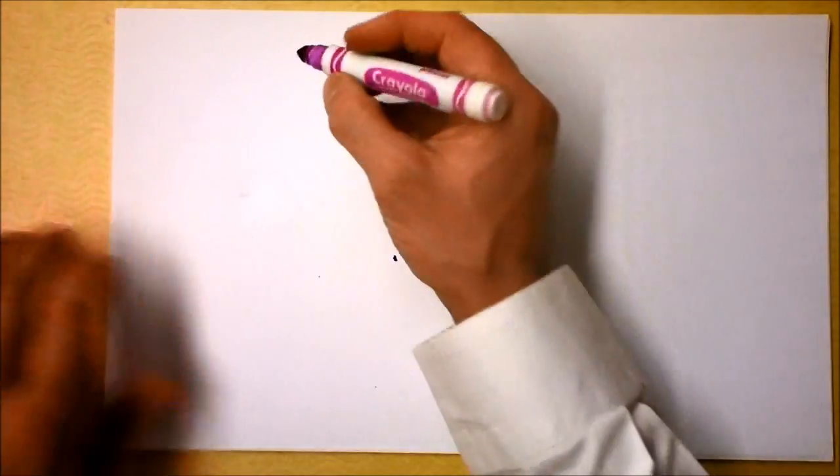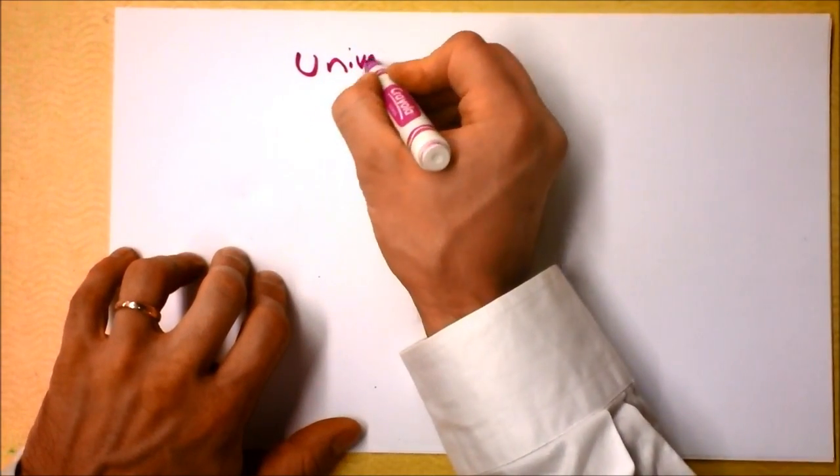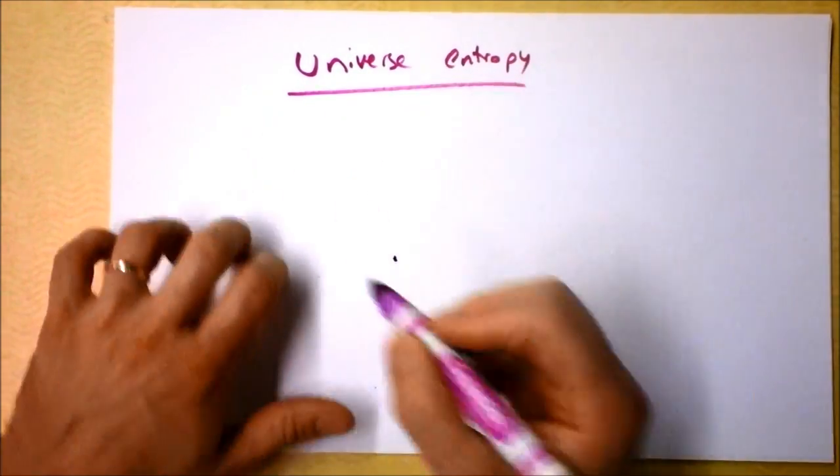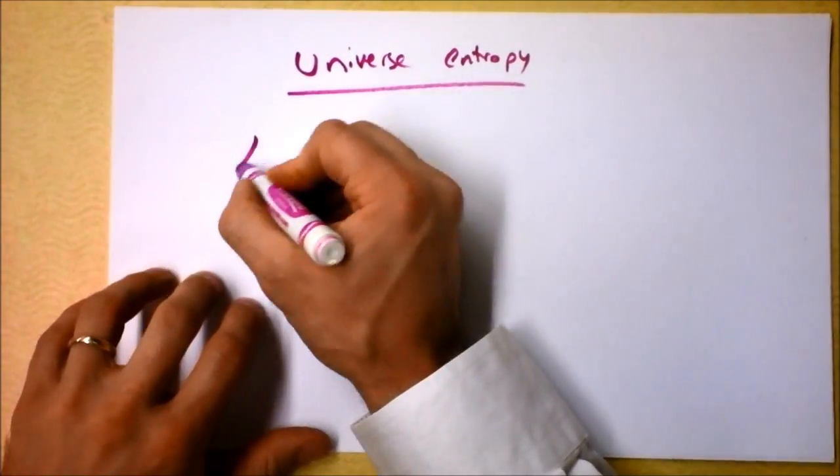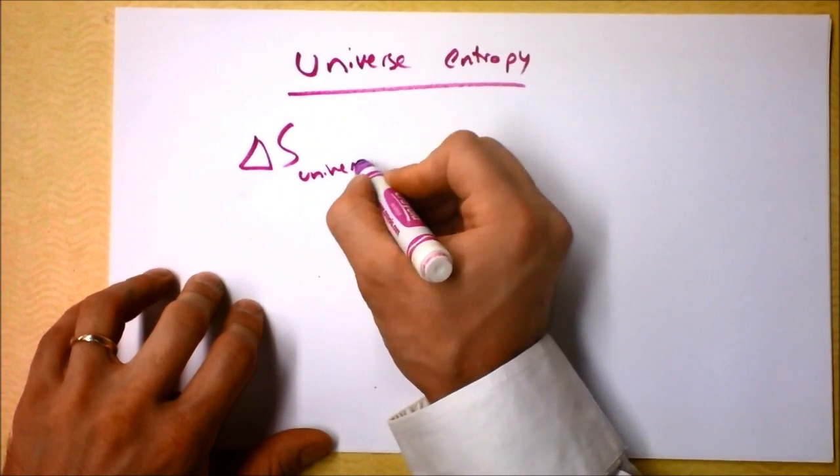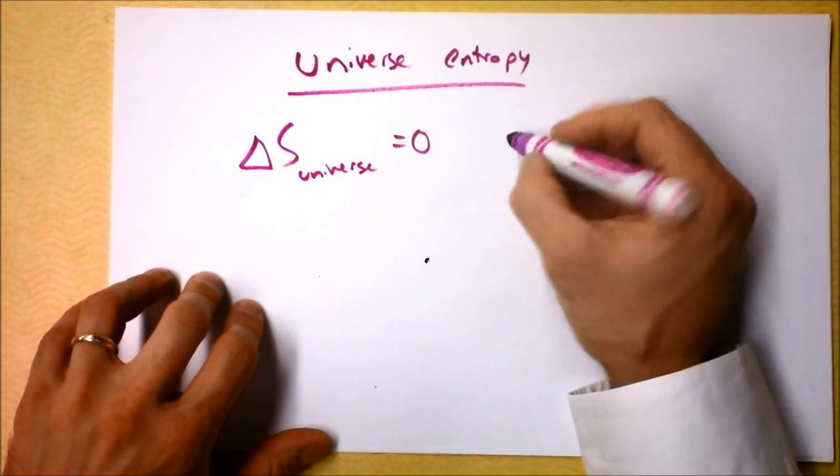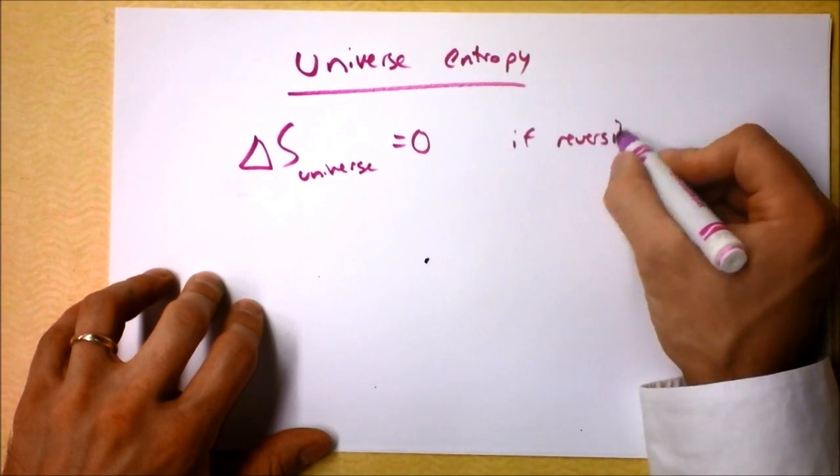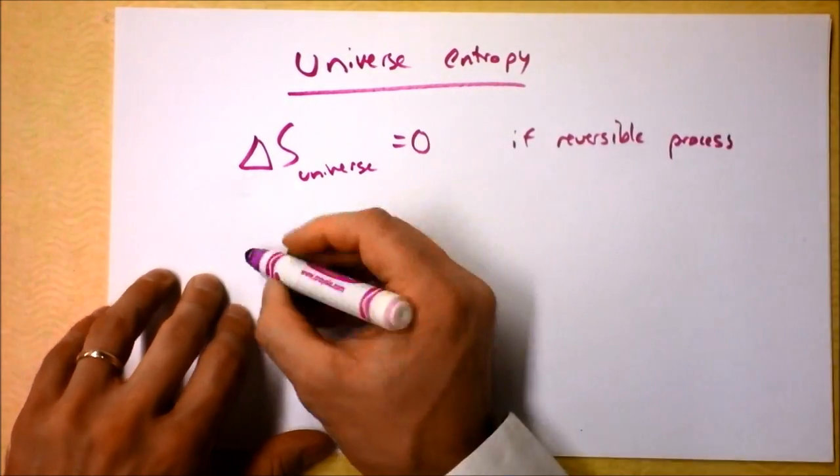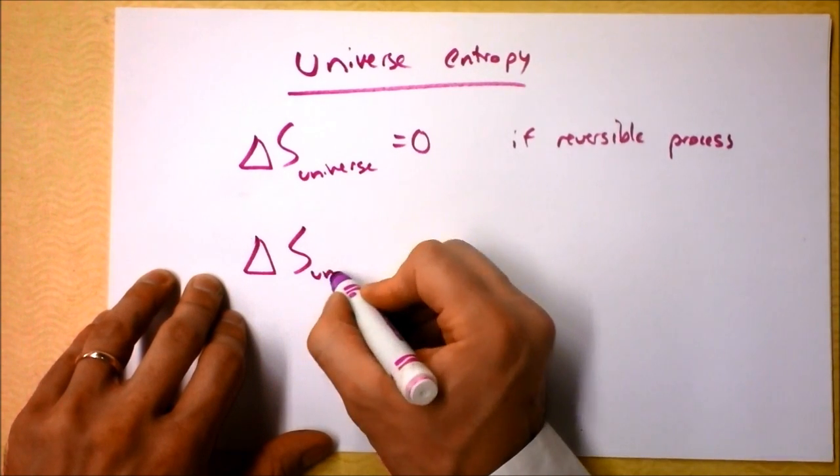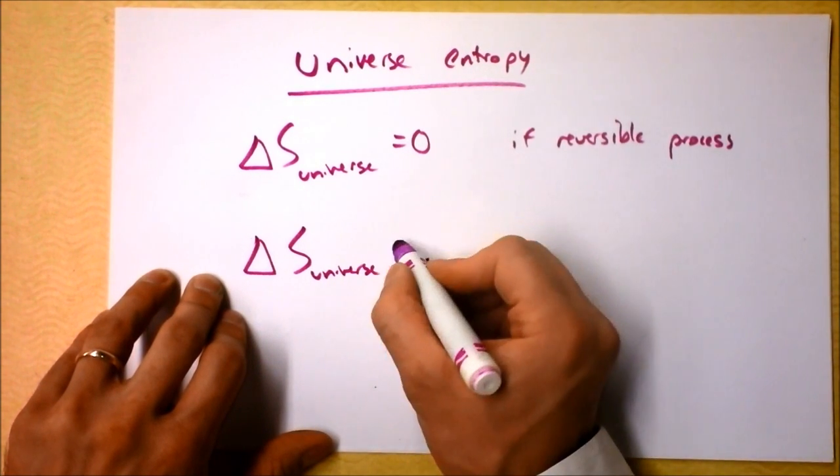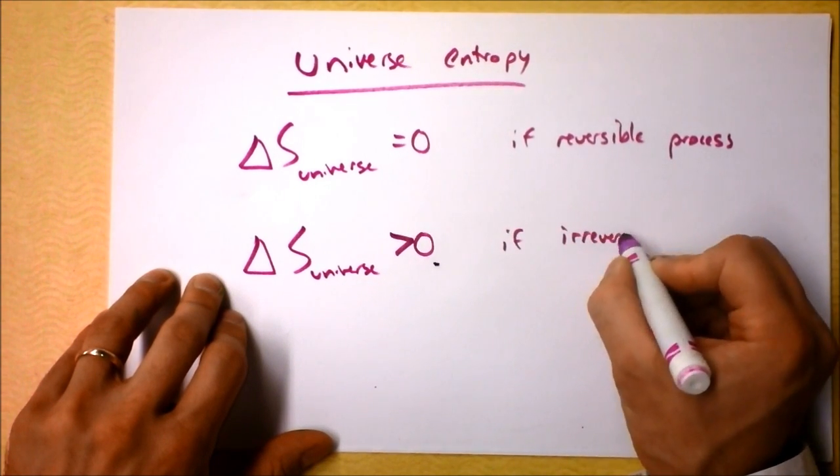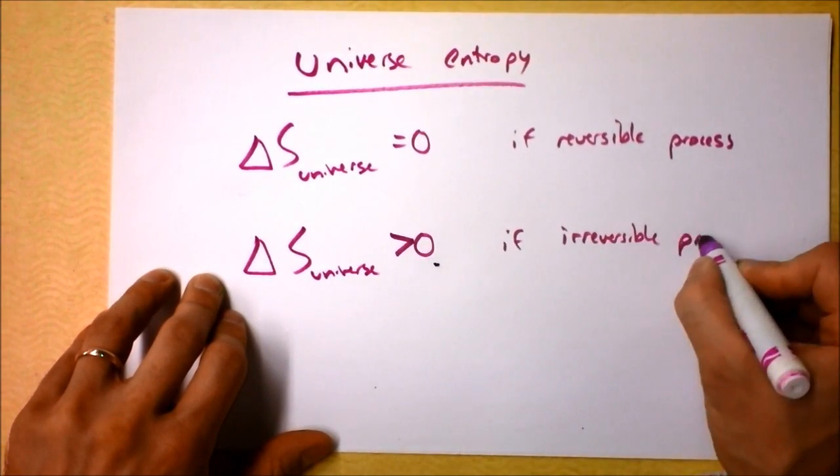We could be a little bit more careful about it. We could say universe entropy is like delta S universe equals zero if reversible processes occur, and delta S universe is greater than zero if irreversible processes occur.